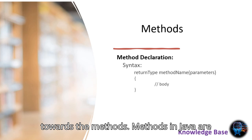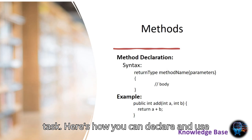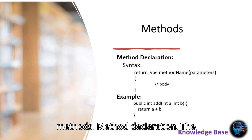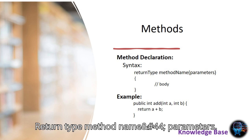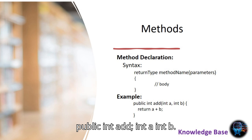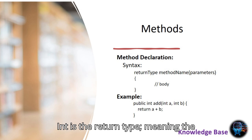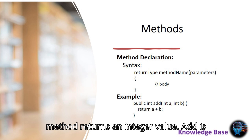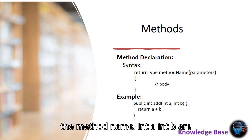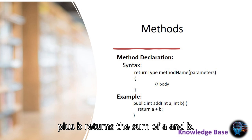Moving towards methods. Methods in Java are blocks of code that perform a specific task. The syntax for declaring a method is: return_type method_name(parameters) { body of the method }. For example: public int add(int a, int b) { return a + b; }. In this example, public indicates the method is accessible from other classes, int is the return type meaning the method returns an integer value, add is the method name, int a and int b are parameters passed to the method, and return a + b returns the sum of a and b.